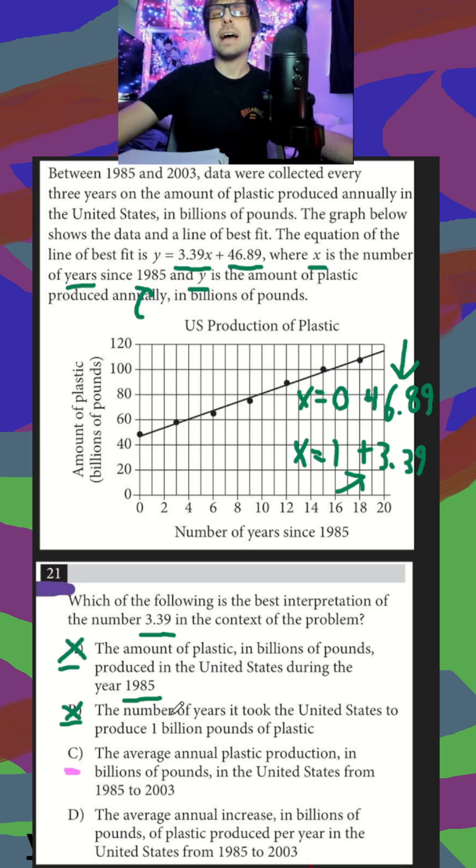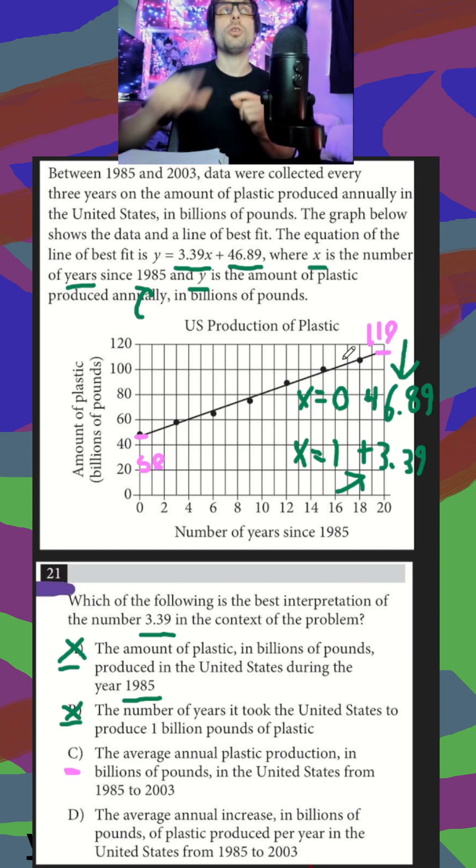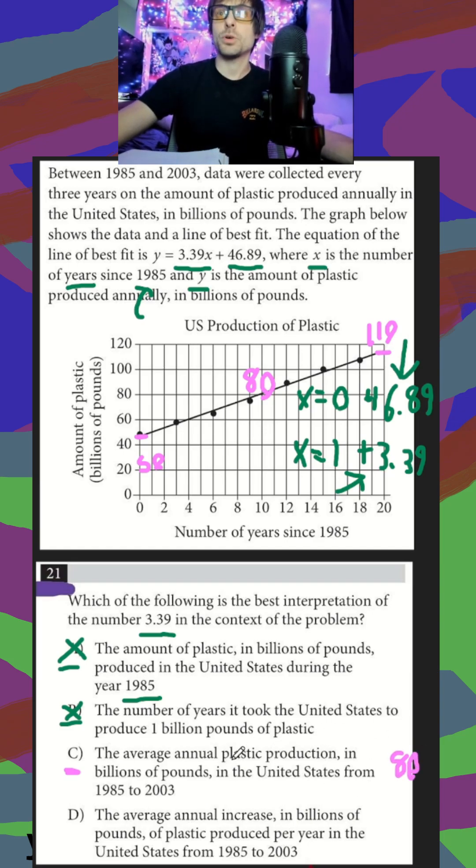In C, the average annual plastic production in billions of pounds in the U.S. from 1985 to 2003. Now that sounds like a good answer, but let's think about what that's saying. To oversimplify this, let's call this starting at 50 and ending at 110. My actual average plastic production per year over the course of this time period would just be finding the middle. So our middle between these would be 80. So my answer to C would be 80 billion pounds of plastic per year. Well, that doesn't look like our slope, right?